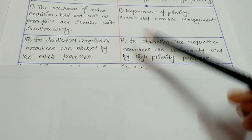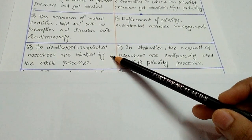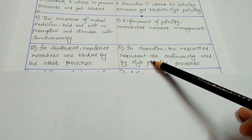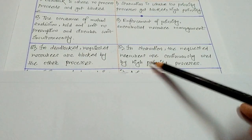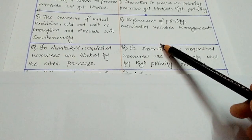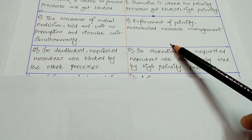The third point is in deadlock, requested resources are blocked by other processes. In starvation, the requested resources are continually used by the higher priority processes. Starvation is based on the concept of higher priority and lower priority.